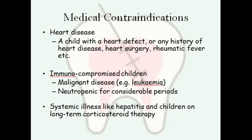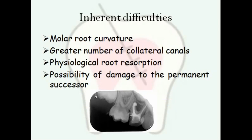Medical contraindications include a child with a heart defect or any history of heart disease, heart surgery, rheumatic fever, etc. — a pulpectomy can be a source of endocarditis, so you would rather extract the tooth than let it be a source of infection. Immunocompromised children, such as those with malignant disease like leukemia, neutropenic for considerable periods, systemic illnesses like hepatitis, or children on long-term corticosteroid therapy are all medical contraindications.